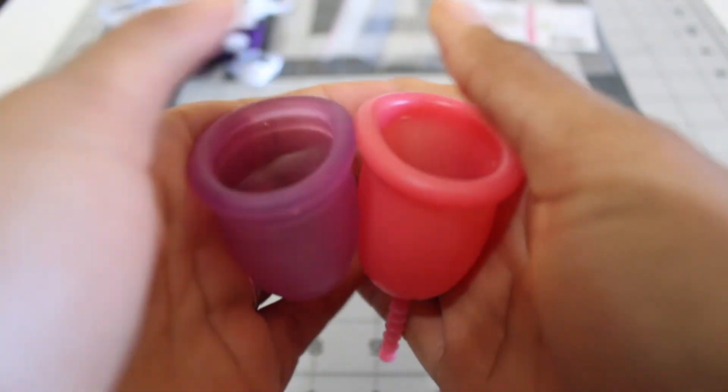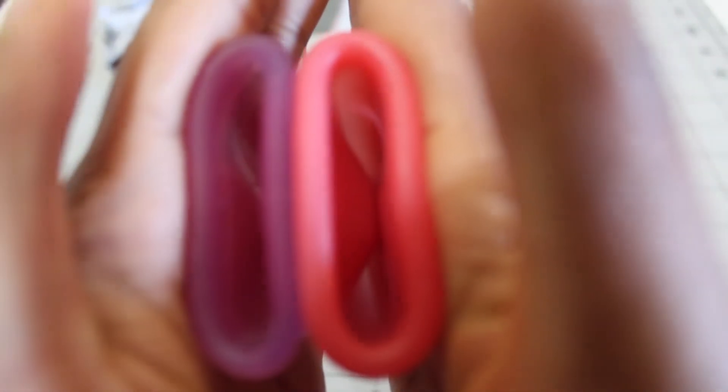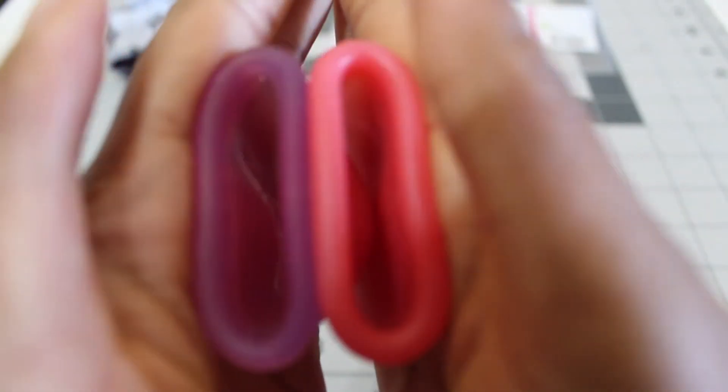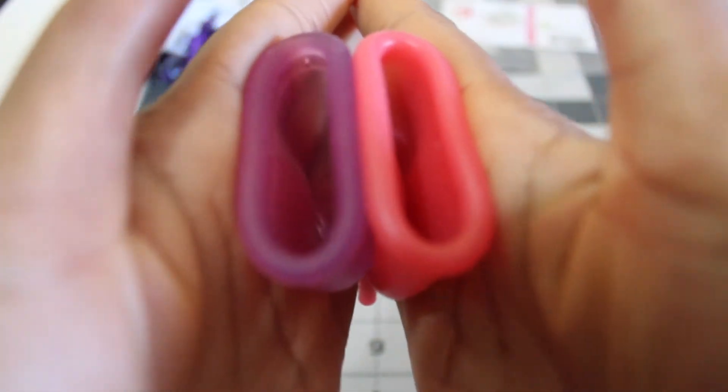Okay, so you can see inside Isabel on the right, inside the Ruby. So the Ruby is a good bit firmer than Isabel but still both really soft cups. It's just that Isabel is very soft.